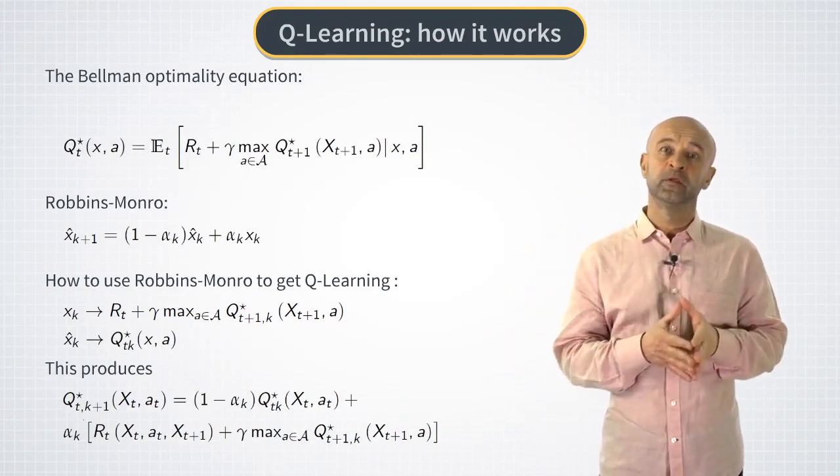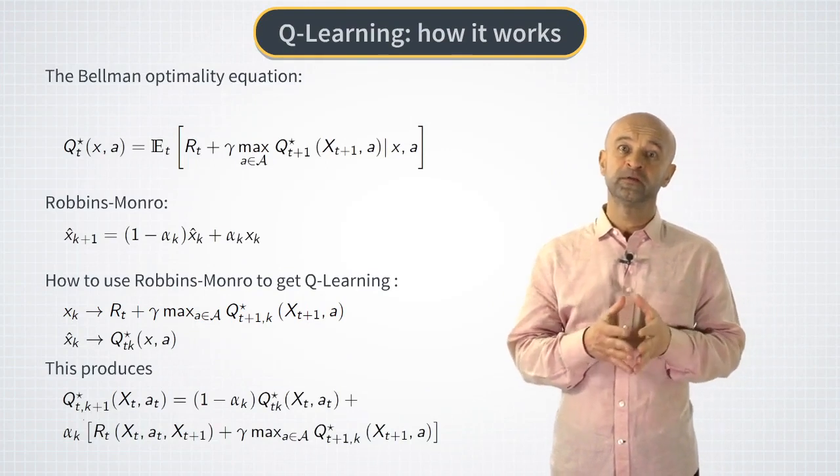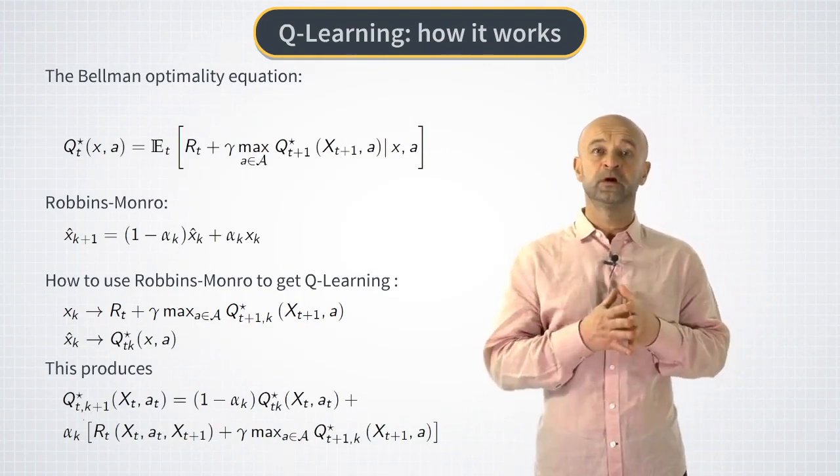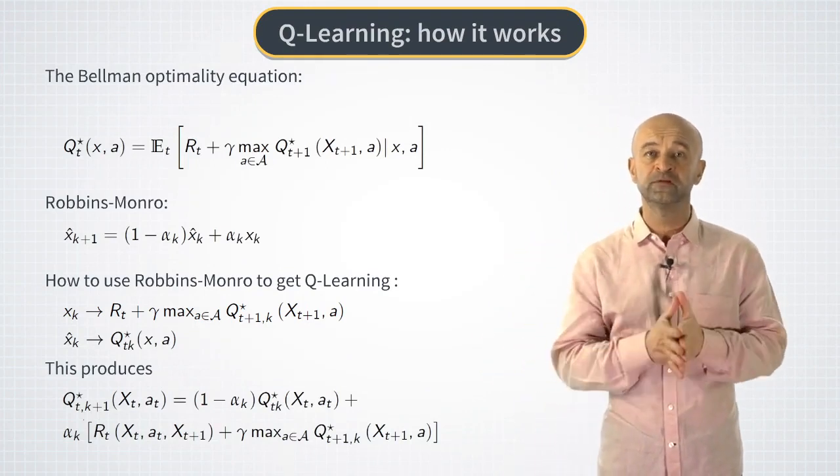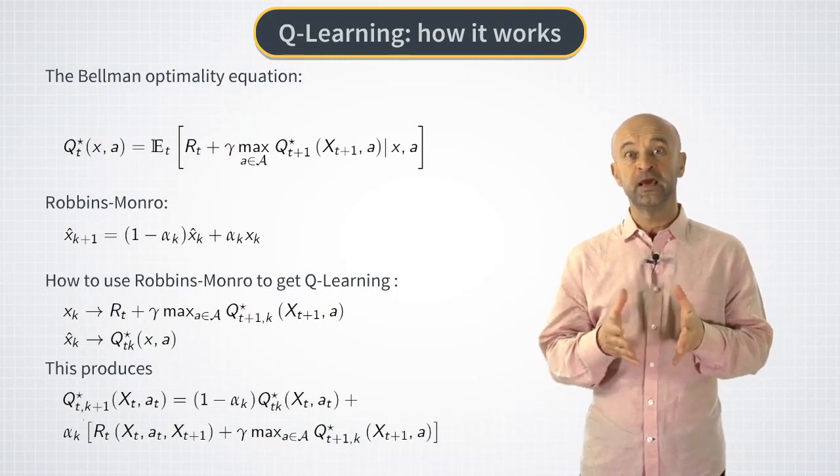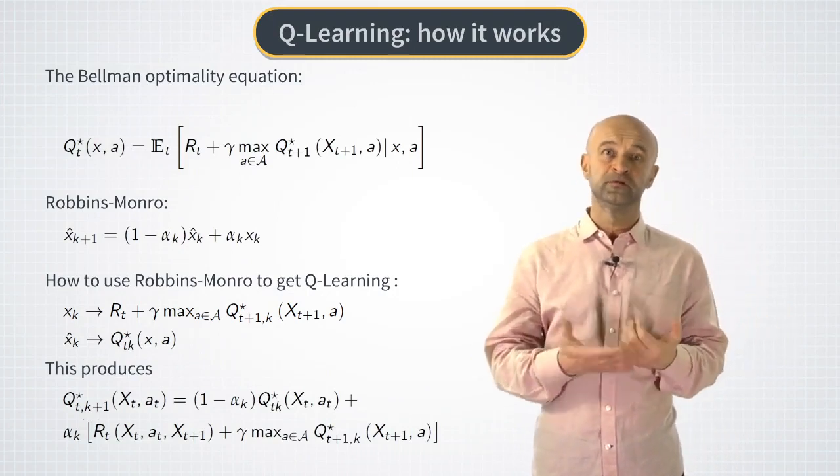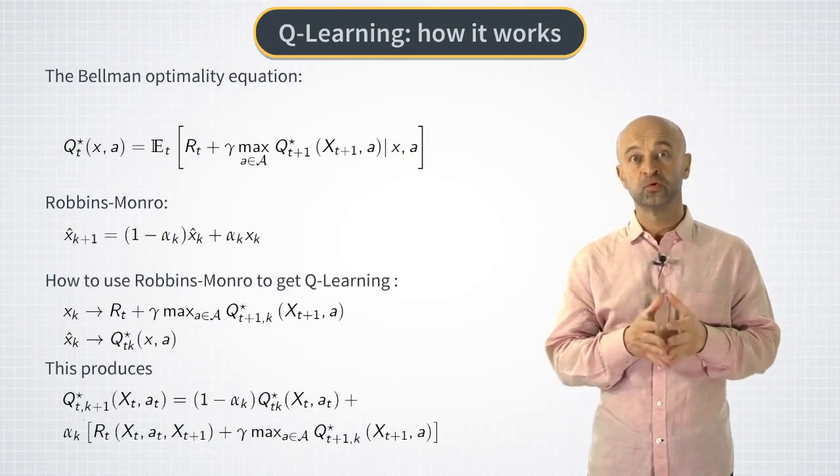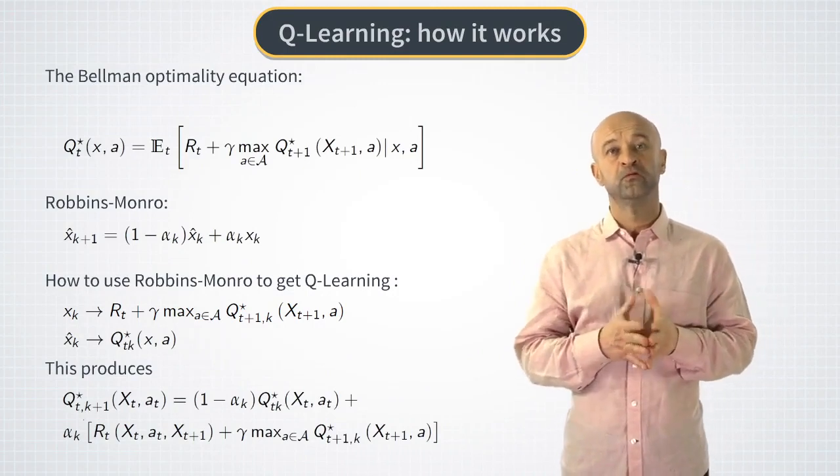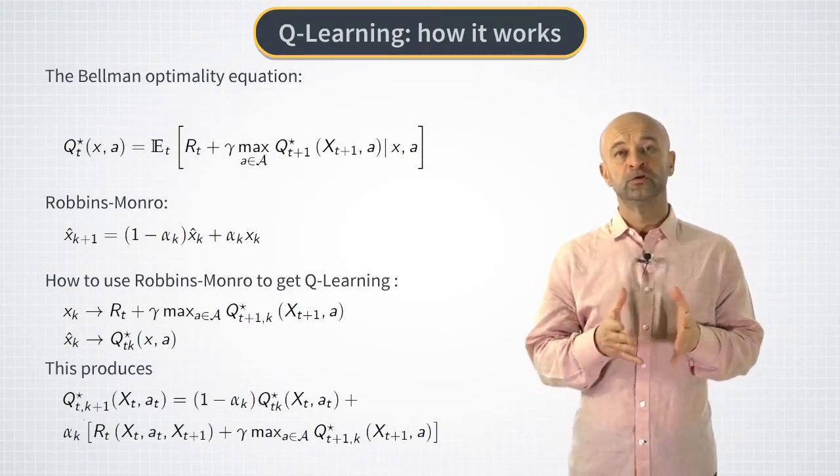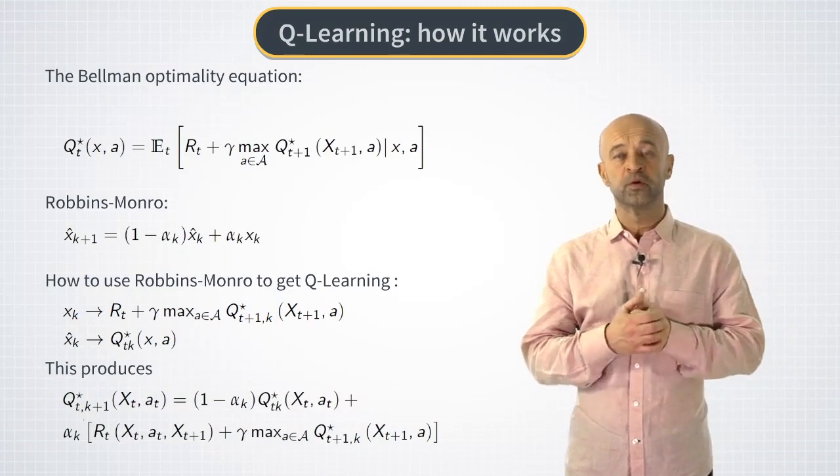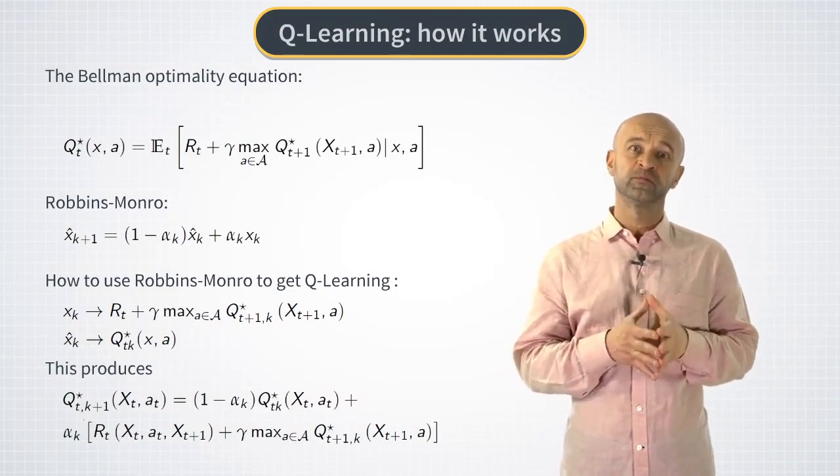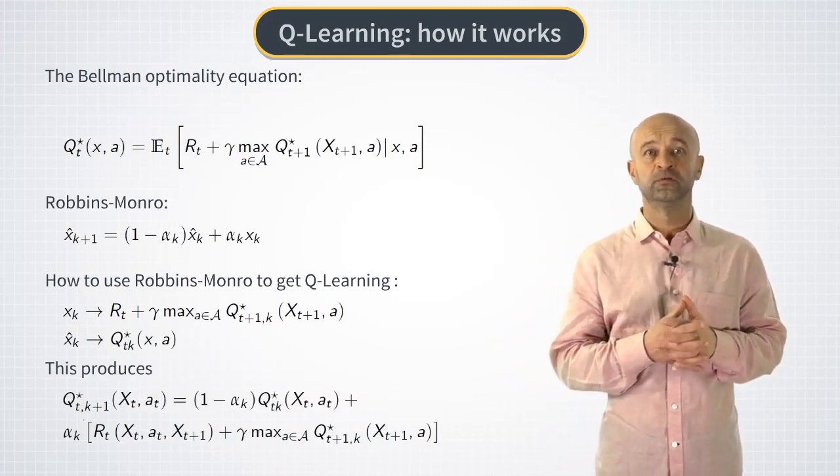In the limit when all state action pairs are encountered an infinite number of times in data, Q iteration is guaranteed to asymptotically converge to a true optimal value function for all such pairs. You can read more on conversion properties of Q learning algorithms in the weekly reading for this week.